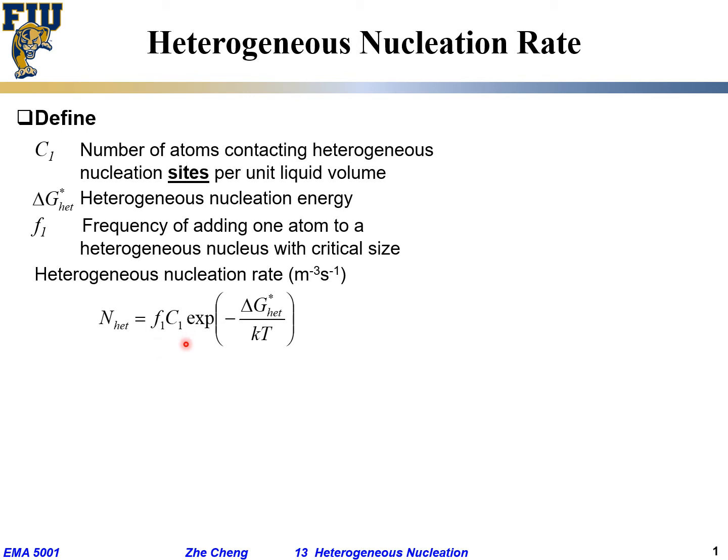How many atoms are in contact with the special sites, times what's the probability of overcoming what? The heterogeneous nucleation barrier. You see how we define the rate?